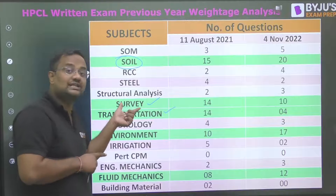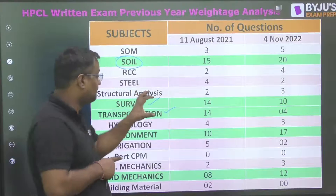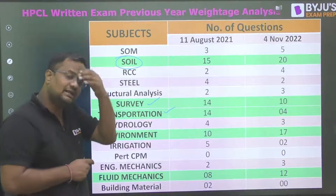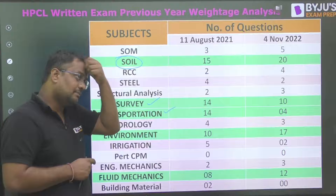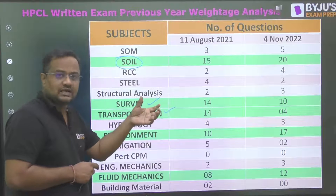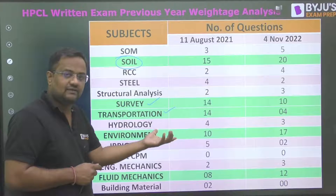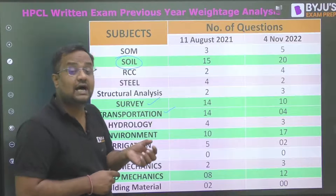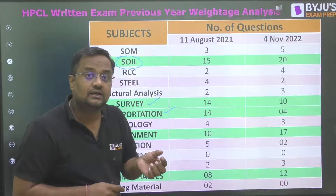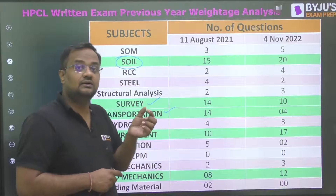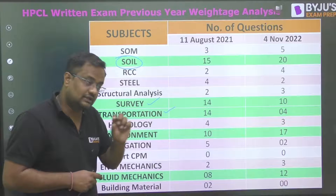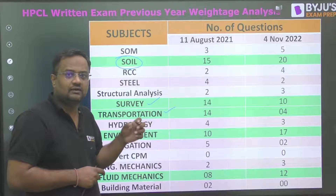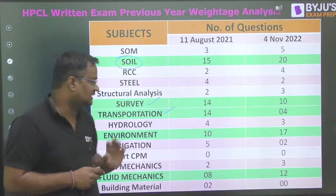In addition to leveling, departure, latitude, and compass surveying, remote sensing and triangulation have a lot of questions in HPCL. For transportation, the majority of questions are from highway, as expected, but certain questions are also from runway design of airports. Railway questions are very few.